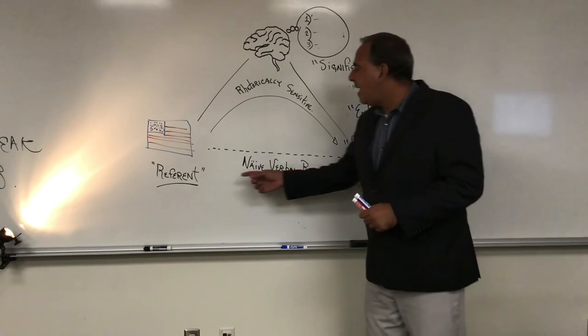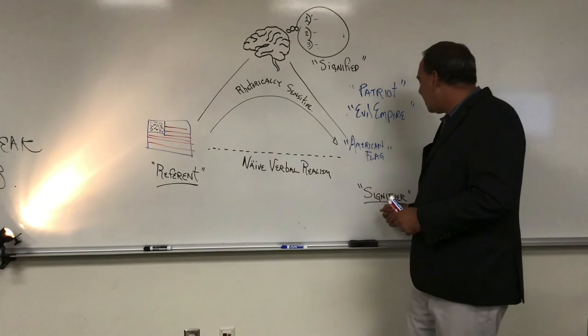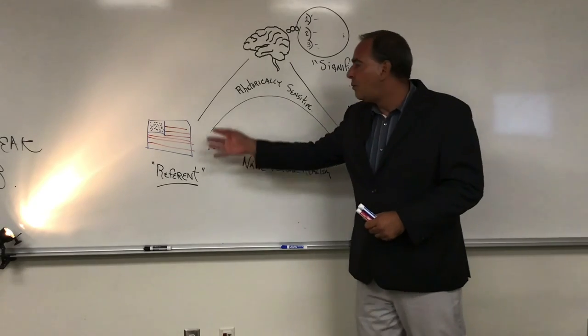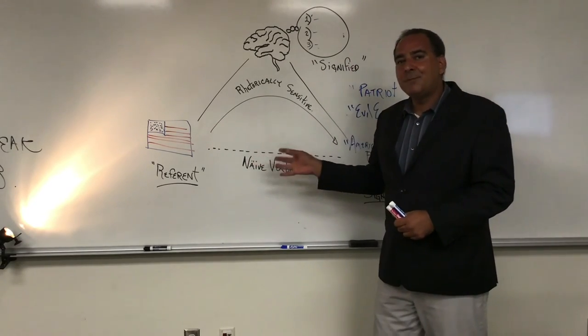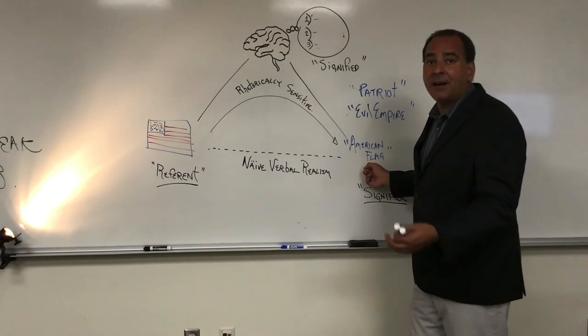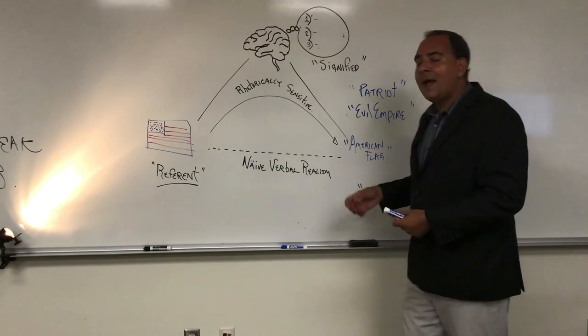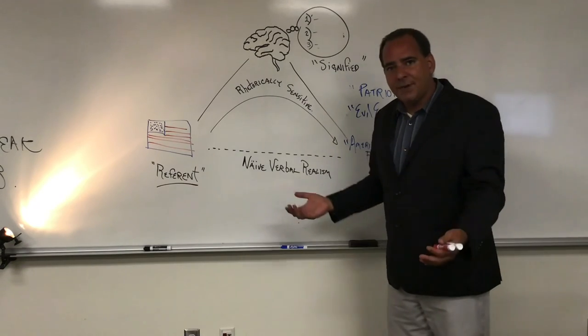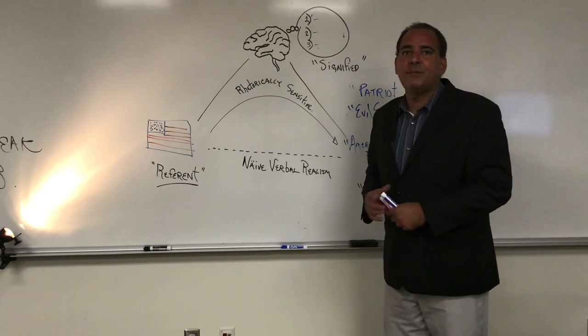But the whole concept of having a naive, verbally realistic, signifier referential representation of this object is pretty difficult. We can call it the American flag. That's its dictionary or denotative definition. However, it has a whole host of other connotative assumptions along with it.